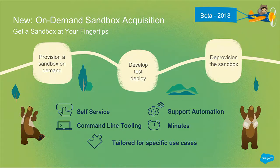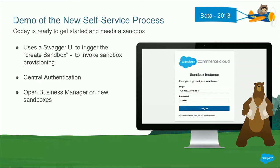We've started making changes over the last few months and will continue through 2018 with a new mechanism for on-demand sandbox acquisition. We want sandboxes to be as easy to acquire as scratch orgs within Salesforce — accessible from a REST API or a command line tool like Salesforce DX — to spin them up, specify configurations, use them, and decommission them, all within minutes instead of hours or days. Dirk is going to take us through what we've built and talk about a beta program opening in 2018.